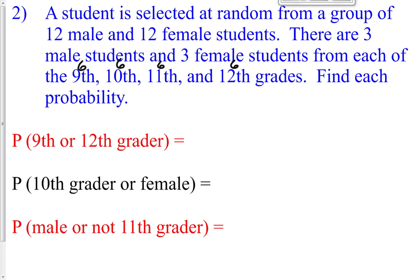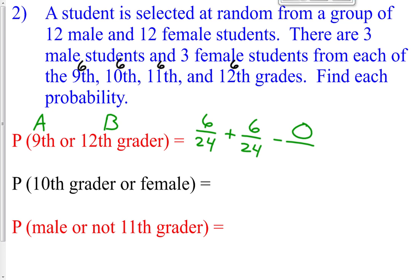Find the probability of selecting a ninth or twelfth grader. P(A) + P(B) - P(A and B): there are 6 ninth graders out of 24, plus 6 twelfth graders out of 24. Subtract the overlap — no students are both ninth and twelfth grade, so subtract 0/24. Six plus six is 12/24, which equals one half.